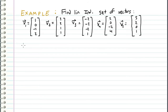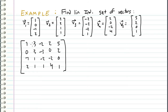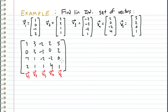So all we have to do is we throw these vectors into a matrix. So here I have V1, V2, V3, V4, and V5 all inside a matrix. And then I row reduce it in order to find the pivot columns.